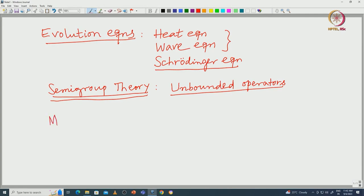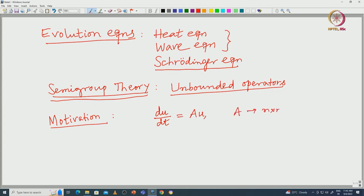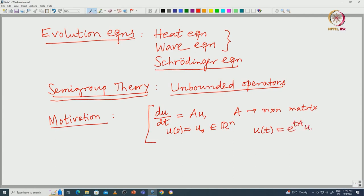As a motivation for the study of semigroup theory, consider this ODE in a finite dimensional space, namely ℝⁿ: du/dt = Au, where A is an n×n matrix, real or complex. For this Cauchy problem, if you impose an initial condition, the solution is immediately given by e^{tA} u₀. In fact, you can define the solution for all t.